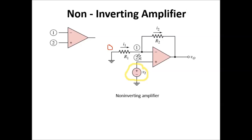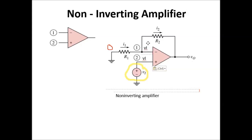Based on the two op-amp characteristics: first, the two input nodes must have equal voltage. Since node 2 is directly connected to the input voltage signal v1, that node equals vi. Therefore node 1 here is also vi. The second property is there is no current flowing into the op-amp.